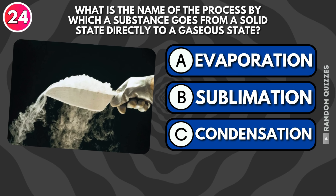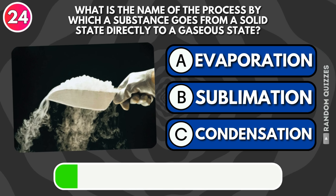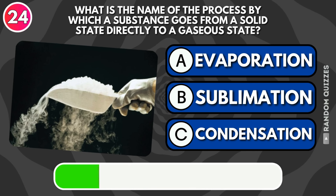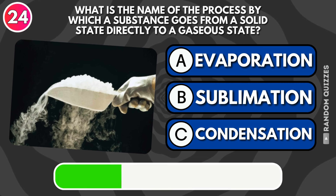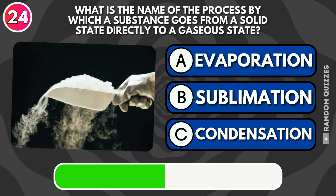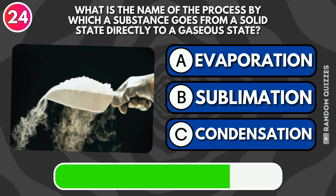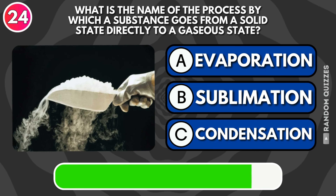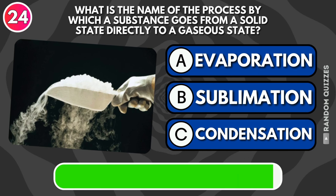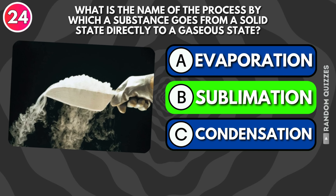What is the name of the process by which a substance goes from a solid state directly to a gaseous state: evaporation, sublimation, or condensation? Answer: Sublimation.